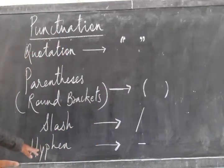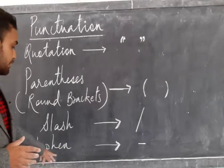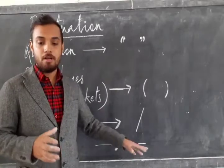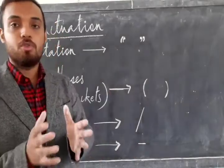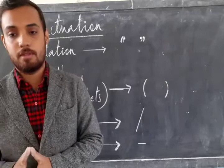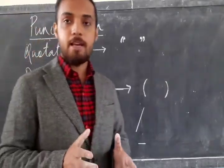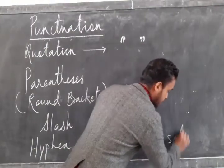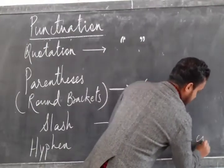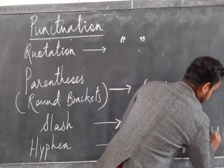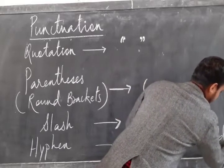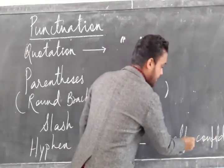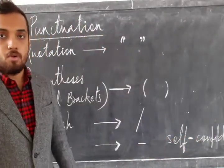The other punctuation is hyphen. What is a hyphen? You can see a dash over here. Hyphen is used to join or separate the syllables. Example: she is self-confident. Now over here, self-confident is separated by hyphen.